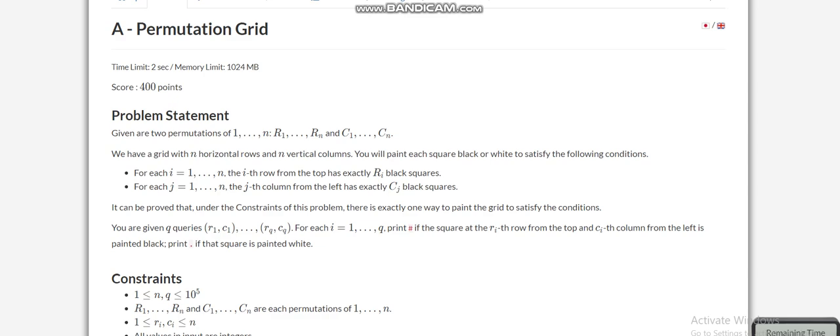Today we are going to discuss the first problem of AdCoded Regular Contest 132, which is Permutation Grid. We are given two permutations R and C, where R denotes the number of black cells in the ith row of the matrix and C_i denotes the number of black cells in the ith column. We have to find what is the color of the cell in the matrix R_i, C_i for Q queries.